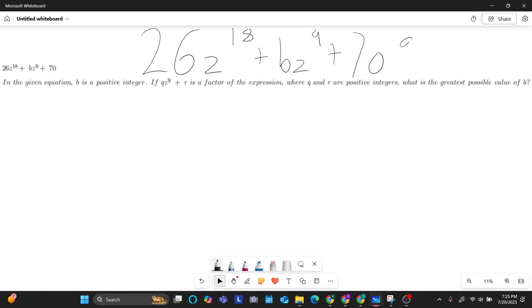All right, starting off with question number one. In this given equation right here, b is a positive integer. If qz to the nine plus r is a factor of the expression, where q and r are positive integers, what is the greatest possible value of b? So looking at this question, we get three main things. We get that b is a positive integer, qz to the nine plus r is a factor, and q and r are positive integers.